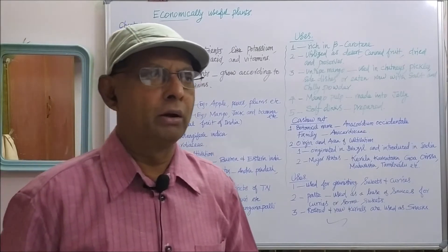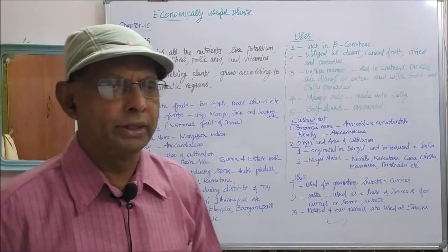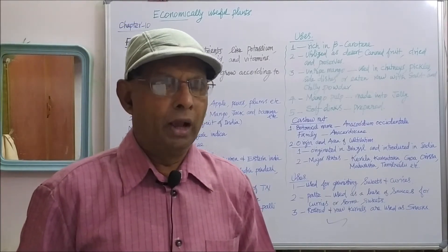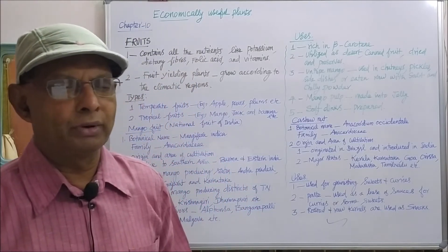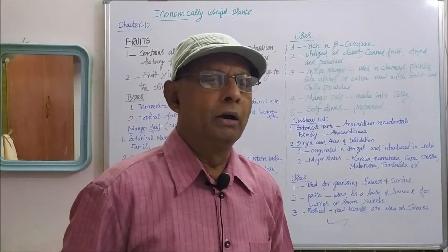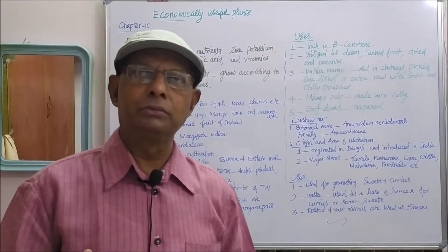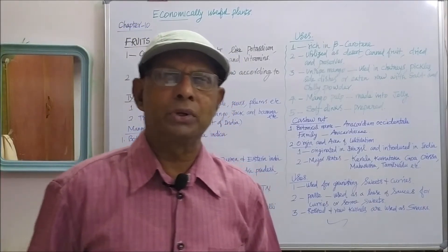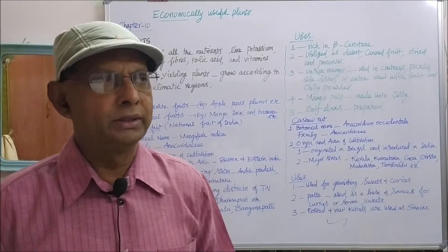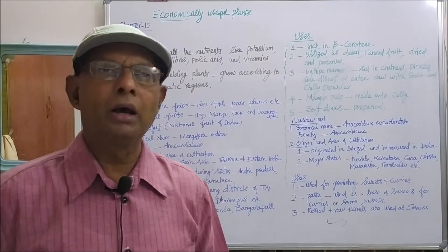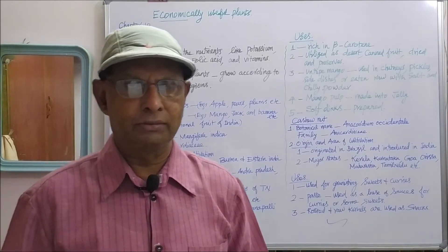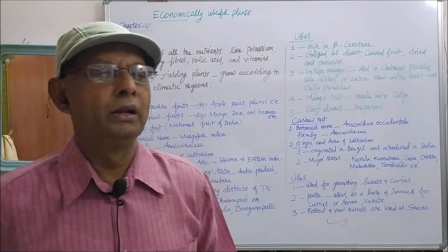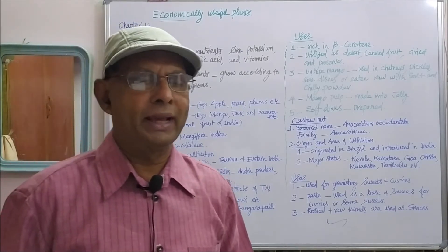We all like fruits because the fruits are very tasty and contain many more nutrients for our health, and this will increase the immunity of our body. What is a fruit? When the ovary develops into a fleshy structure after fertilization, that is the fruit. Fruit is a ripened ovary after fertilization. After fertilization, the ovary enlarges and forms a fleshy part of the plant — that is the fruit.